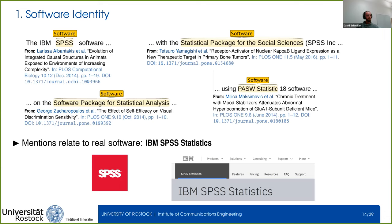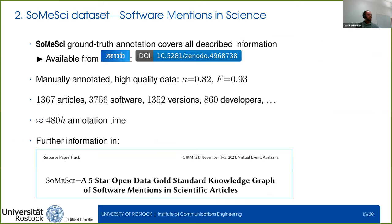With this we have all the information we want about software. We not only consider version, developer, and formal citation, but also other information such as license, abbreviation, or alternative names. With that we move on to how we extracted all of this information automatically.